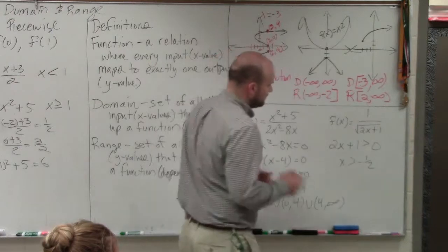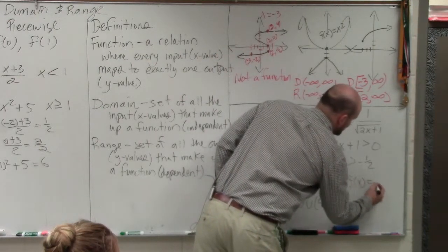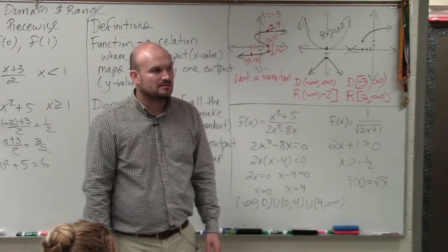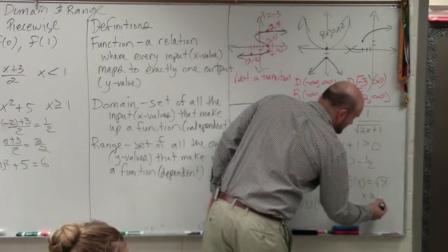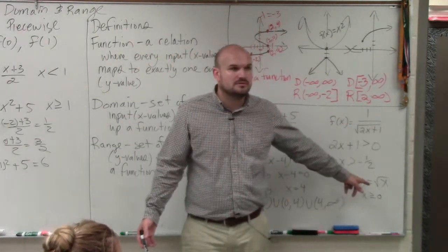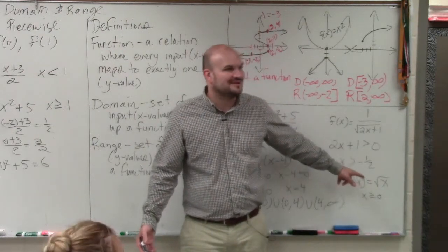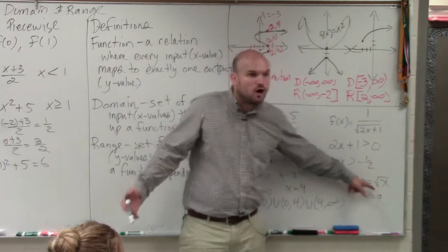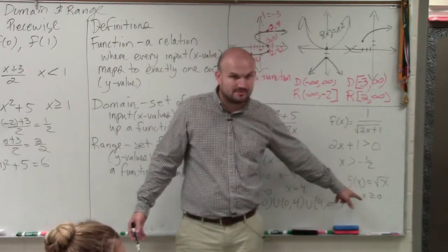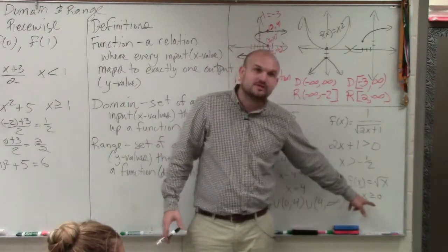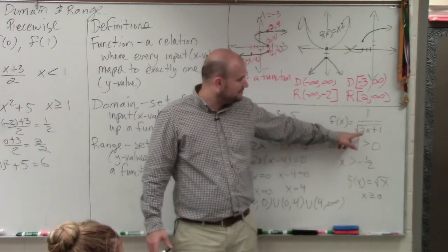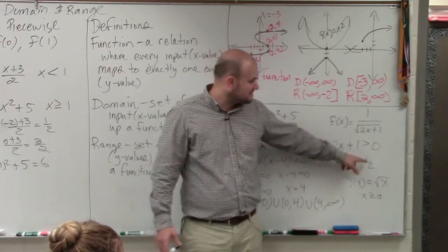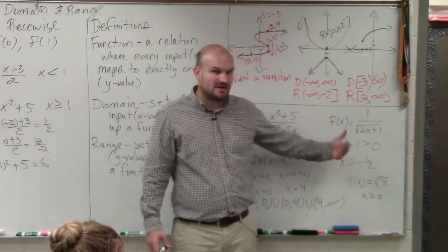Think about it this way. If I just said f of x equals the square root of x, what would be all the numbers that would be a part of our domain? It's all positive numbers — x is greater than or equal to 0. You can take the square root of 0, that's fine, and all numbers larger than 0. You can't do anything less than 0. In this case with 2x plus 1, we can't have it equal to 0, so it has to be all values just greater than, not greater than or equal to, because negative 1 half makes that 0.